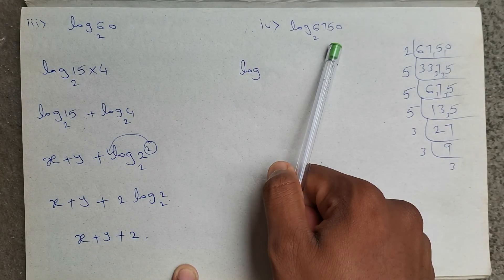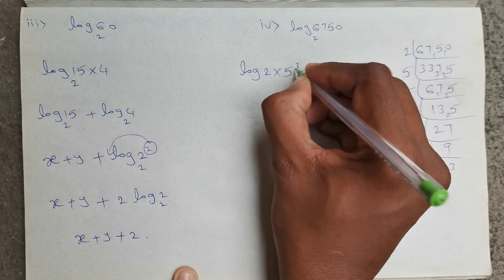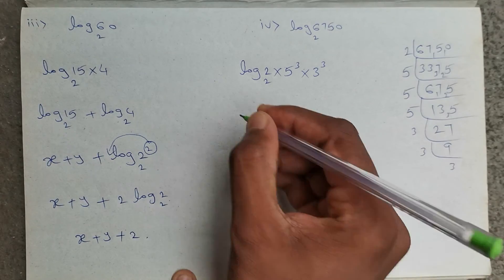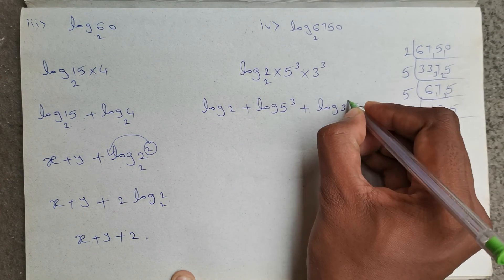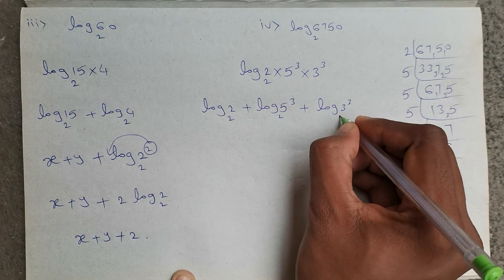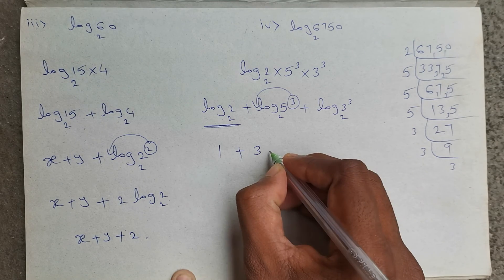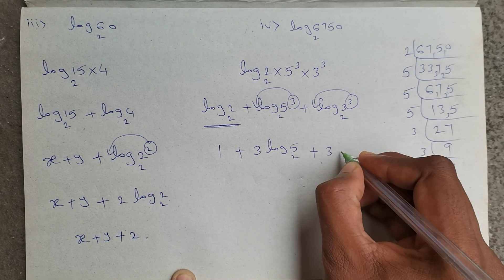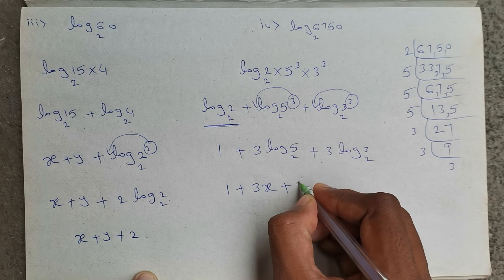So log 6750 base 2 can be written as log (2 into 5³ into 3³), base 2. Expanding: log 2 base 2 plus log 5³ base 2 plus log 3³ base 2. Log 2 base 2 is 1. This power 3 comes to the front: plus 3 times log 5 base 2. Again power 3 to the front: plus 3 times log 3 base 2. Log 5 base 2 is x and log 3 base 2 is y. So the answer is 1 plus 3x plus 3y.